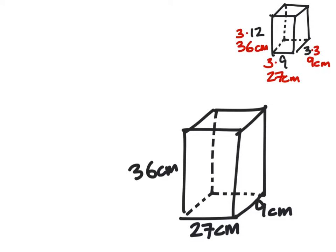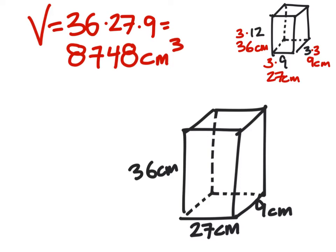So if we wanted to find the volume of this new shape, the volume is just length times width times height for a rectangular prism. So we've got 36 times 27 times 9, and that gives us a volume of 8,748 centimeters cubed for the volume.